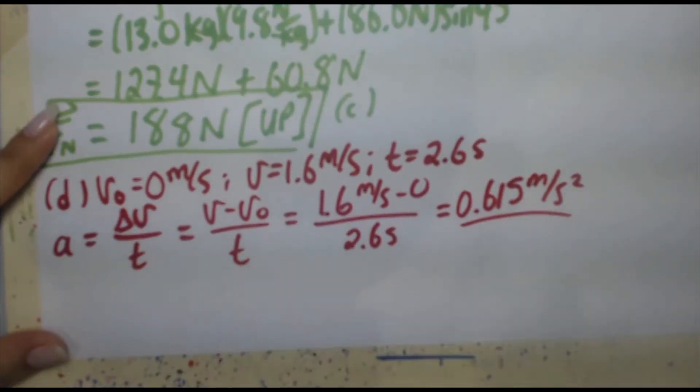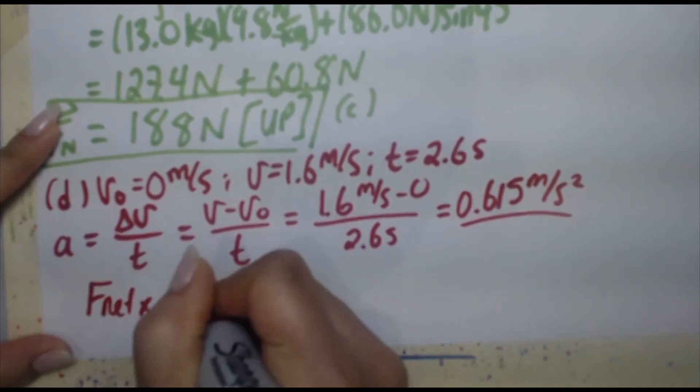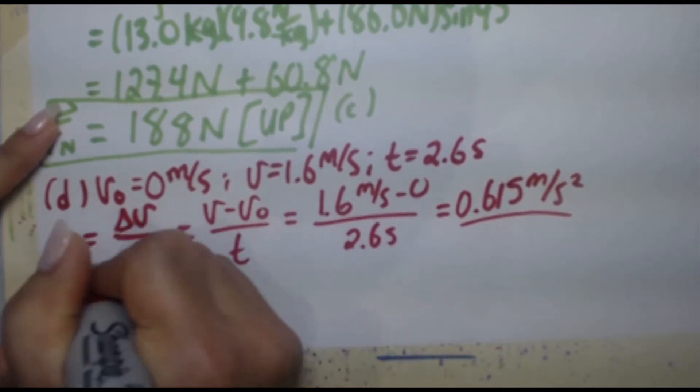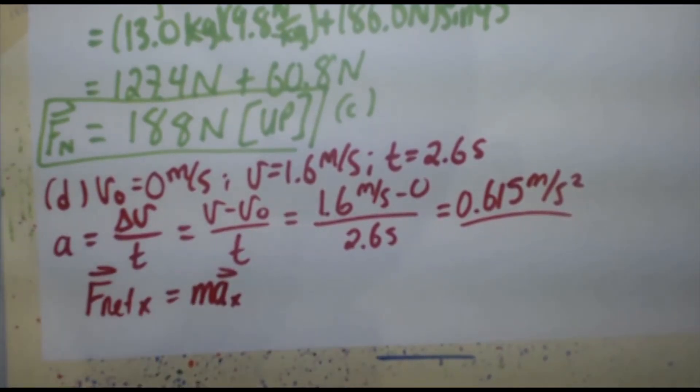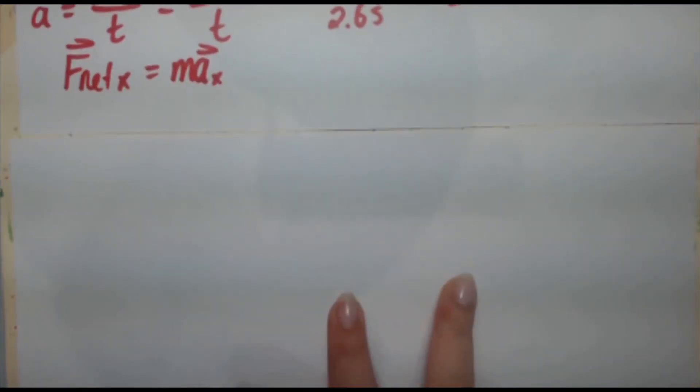So we're actually going to go ahead and work with the X direction here. Okay, so F net X equals MA X, put those vector symbols there. Let's keep working our way up.